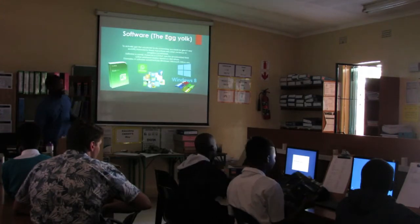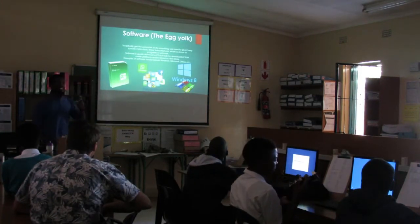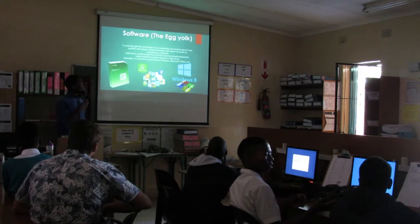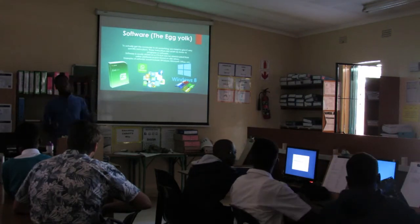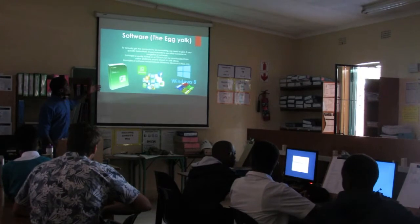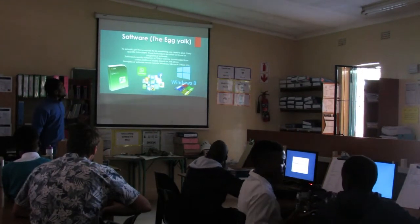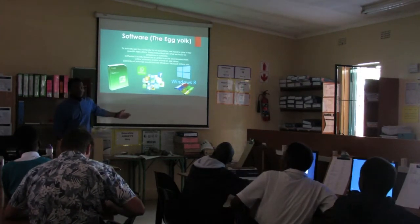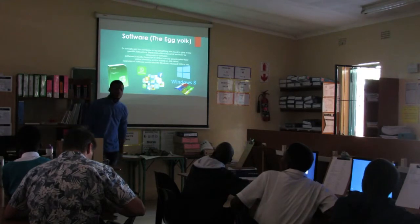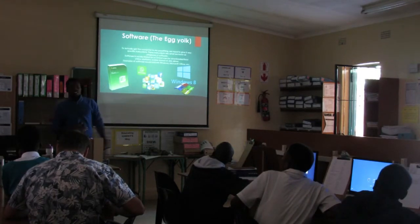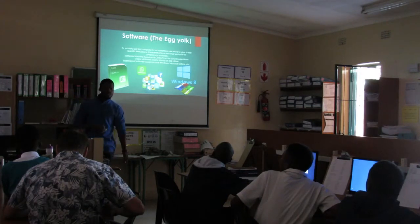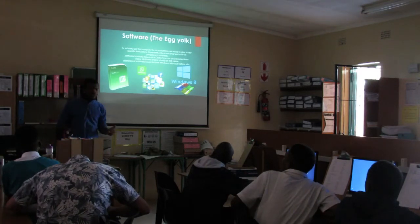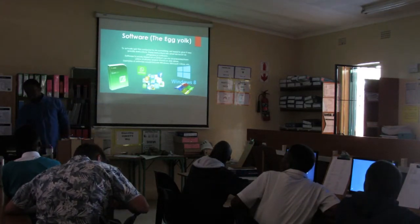Now the yolk — the software. To actually get the computer to do something, we need to give it very specific instructions. These instructions are what we know as programs or software. Software is usually stored on a CD, but can be downloaded from online platforms or stored on disk drives. Examples of software would be WhatsApp, social networks, Windows 8 — which your computer can't work without — and Excel and Word, all those typing and productivity applications.